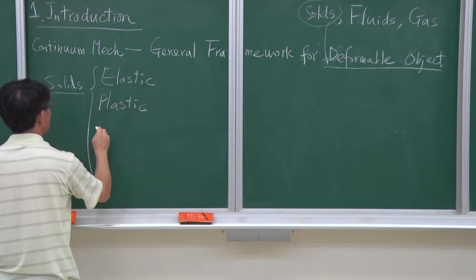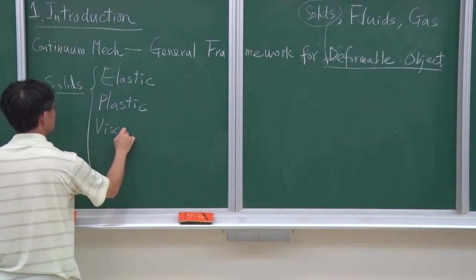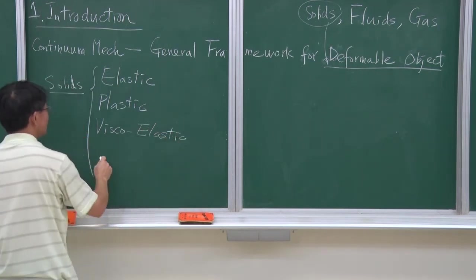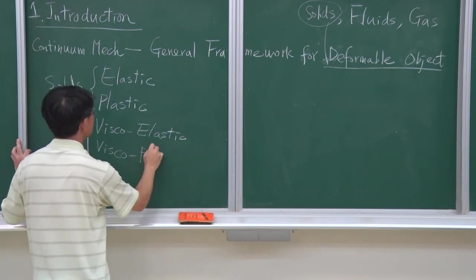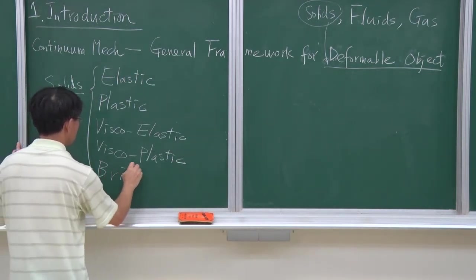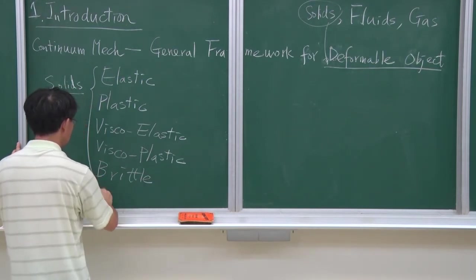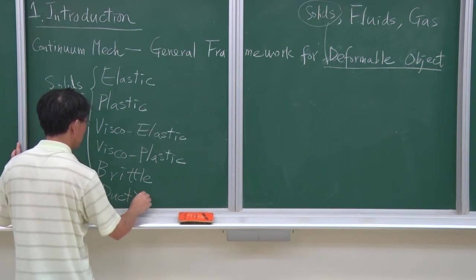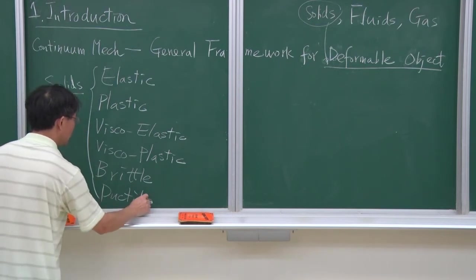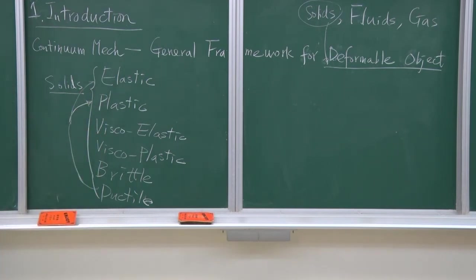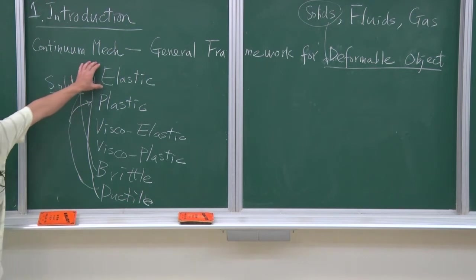We also have viscoelastic and viscoplastic materials — we have a lot to play with. And also we have brittle material and ductile material. Sometimes ductile is referred to as plastic, but may or may not be, because sometimes ductile can be elastic too. Brittle sometimes refers to elastic, but they are not the same thing, because an elastic material may not be brittle.